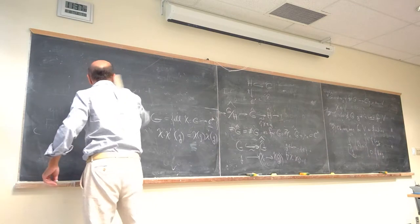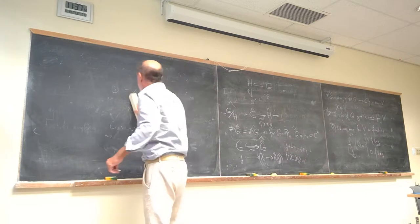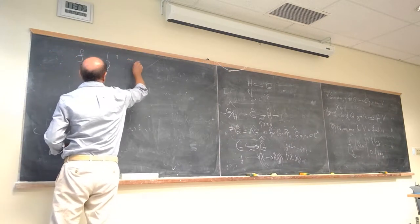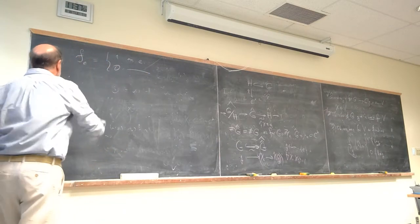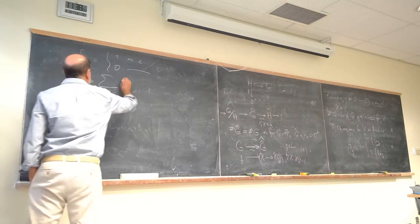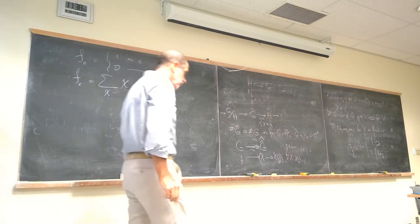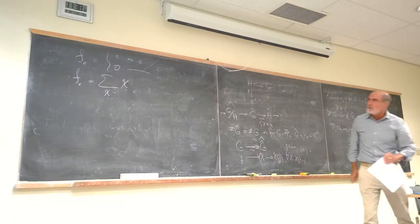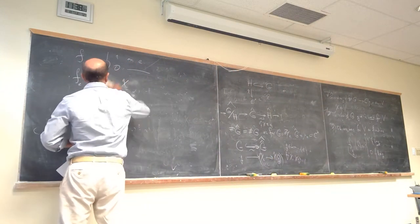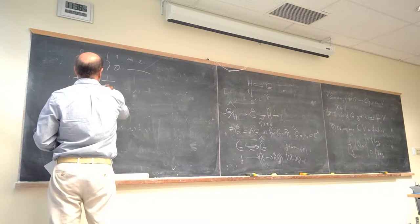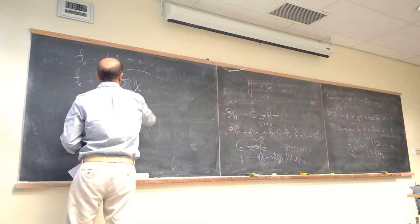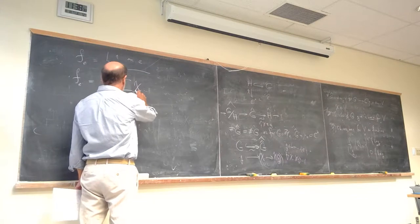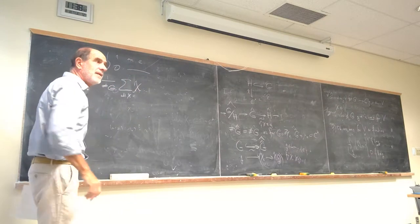Let's start with f_e, the function which is 1 on the identity and 0 everywhere else. I claim f_e equals (1/|G|) times the sum over all characters chi of chi. First, does it take the value 1 on the identity? All characters equal 1 on the identity, so the sum equals |G|. Dividing by |G| gives 1. That's why we need to divide by the order of the group — and dividing is no problem since we're working over the complex numbers.